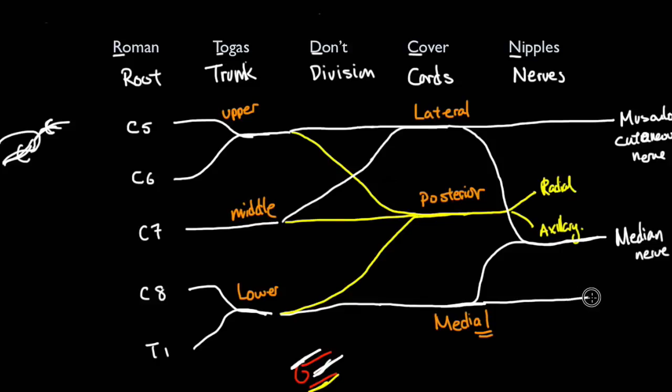And finally, over here, that's the ulnar nerve. So, these are the five nerves that you need to know at the most basic level: musculocutaneous, radial nerve, axillary nerve, median nerve, and ulnar nerve.